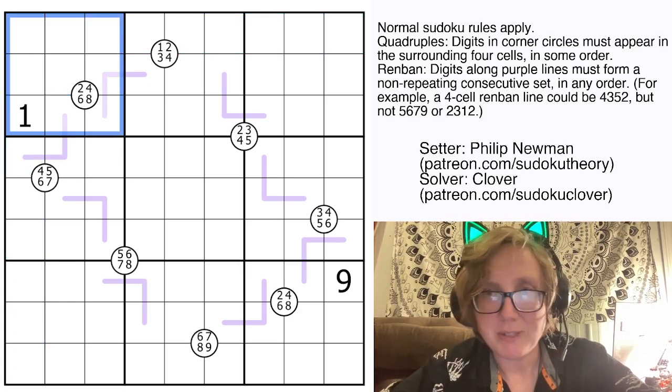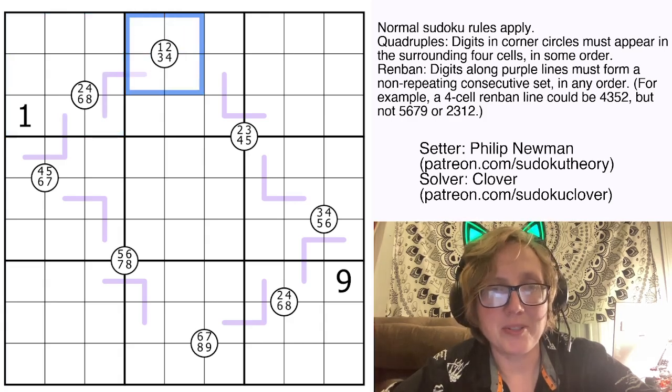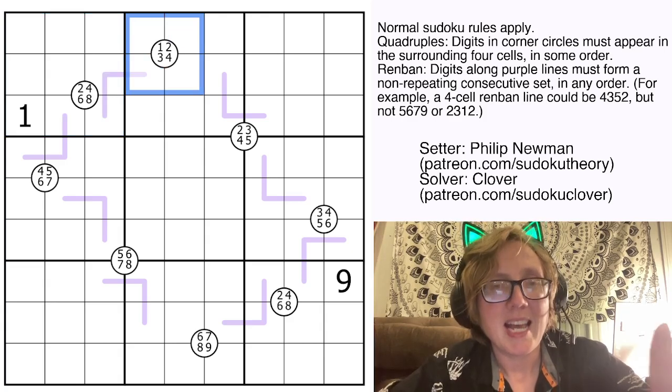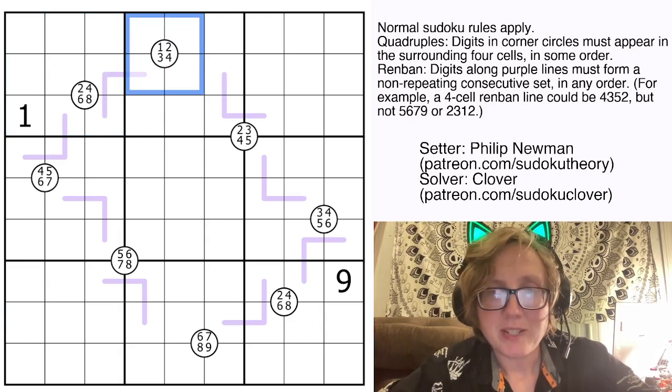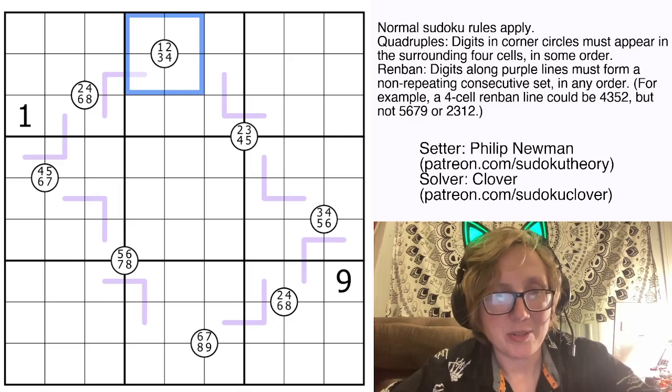We also have two variants. One is quadruple, so that refers to these white circles containing digits. The digits in a white circle have to appear somewhere within the four cells immediately surrounding that circle.